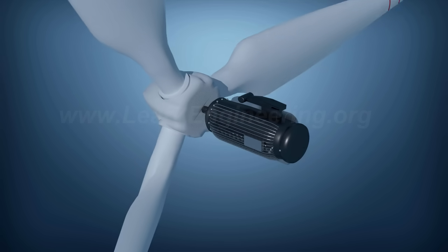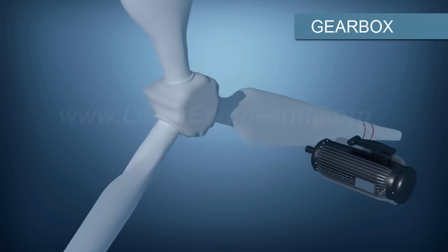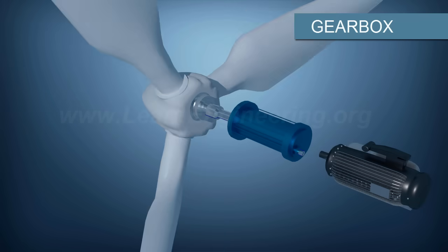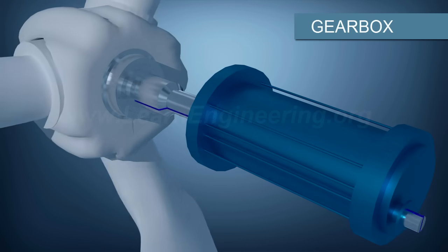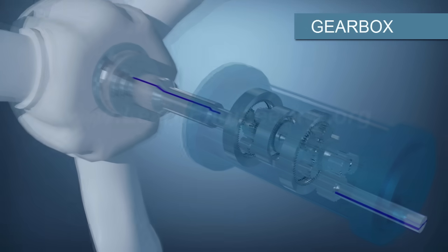So, before connecting to the generator, the speed is increased in a gearbox. The gearbox uses a planetary gear set arrangement to achieve the high speed ratio.